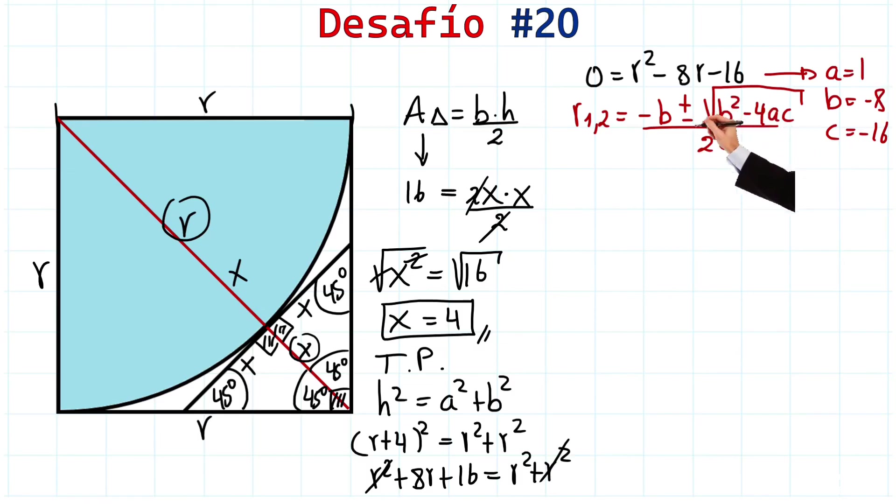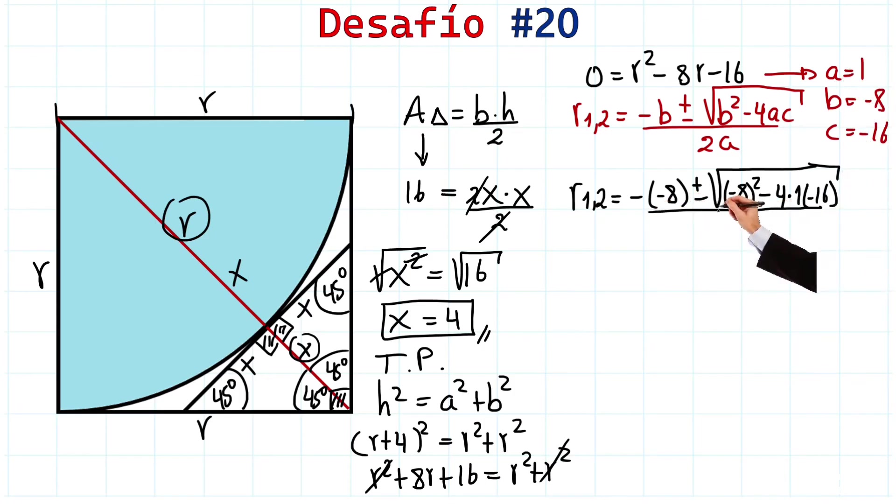So we have R1, 2 is equal to negative B, but B is negative 8. So, we have it like this, plus or minus the square root of B squared, that is negative 8 squared, minus 4 times A, but A is 1, and times C, where C is negative 16. Excellent! And all of this over 2A, but A is 1. So, we have 2 times 1, which is 2. We can remove that one, of course, because 1 multiplied by any number gives us the same number. Excellent!